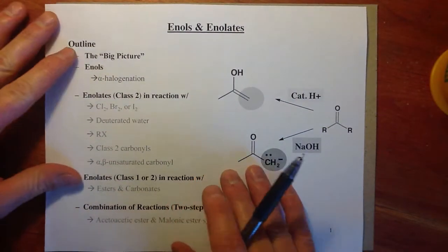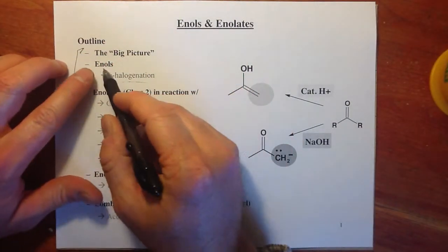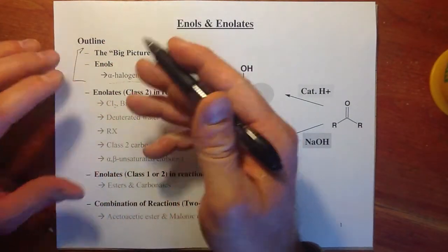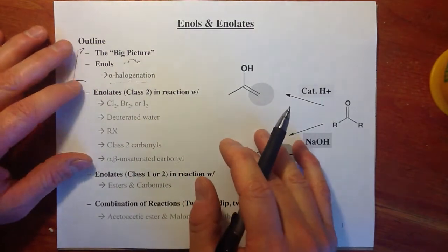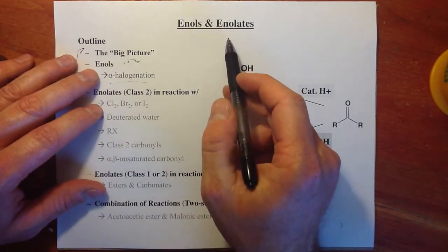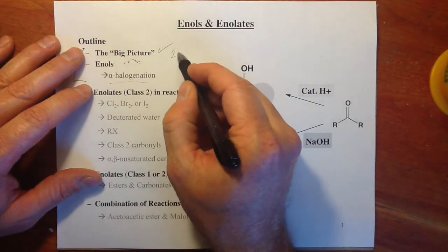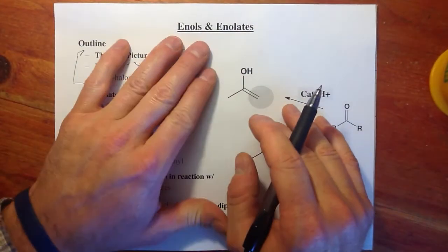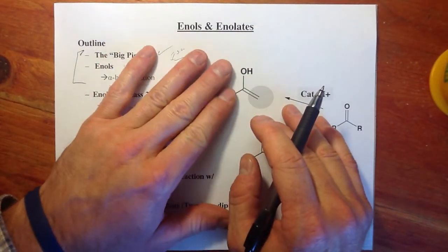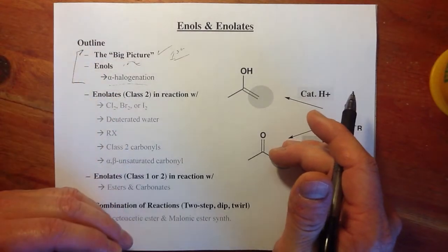What we're going to do with this video is look at alpha halogenation through enols, and then review the big picture before we get started on enolates. Let's get to the big picture first. We need to know what an enol and an enolate are so that we can understand some of the chemistry that they give us.